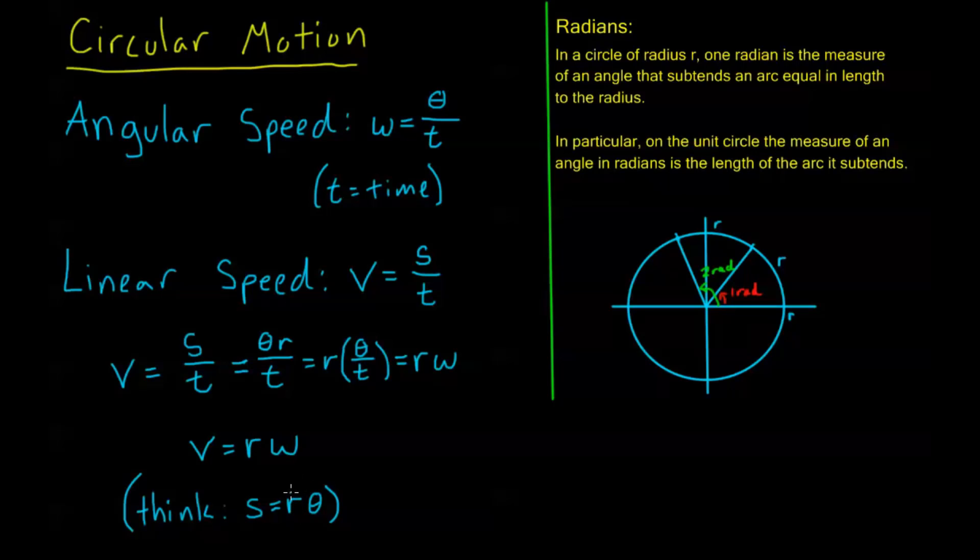Okay? So, that's it for this video. In the next video, I'm going to do examples of all three of these concepts that I talked about here. This can be arc length, area of a circular sector, and circular motion. And we'll see you there.